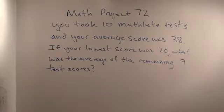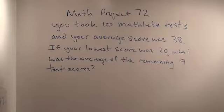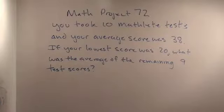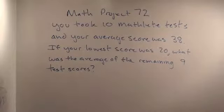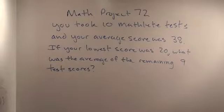Okay, so do you understand the problem? We took 10 Mathlete tests and our average score was 38. It says that if our lowest score was 20, what was the average of the remaining 9 test scores? Now do you remember what average means? That's going to be the whole point of the problem. Yes, I do. But I don't really understand the remaining 9 — what does that mean? Well, let's talk about it. What does average mean? You have a bunch of numbers, add them up, and then divide by that number.